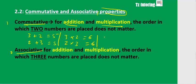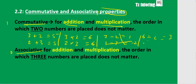The commutative property does not work for subtraction or division. For subtraction: 3 minus 2 is 1, but 2 minus 3 is negative 1 — the order matters. For division: 6 divided by 2 is 3, but 2 divided by 6 is not equal to 3. So the commutative property only works for addition and multiplication.